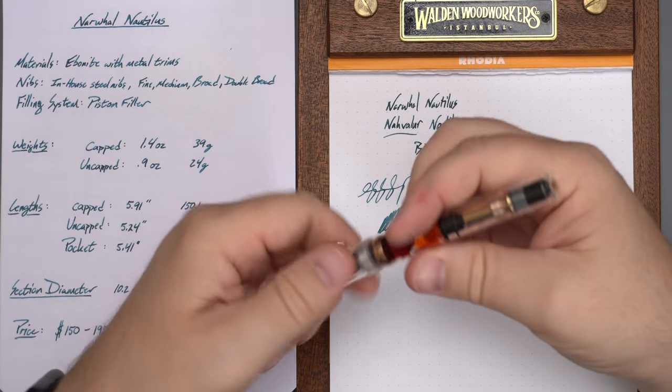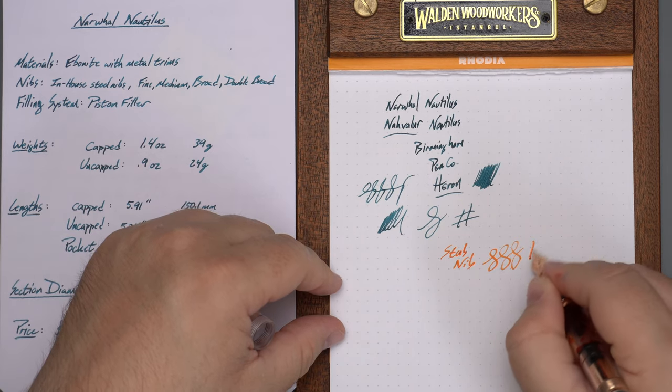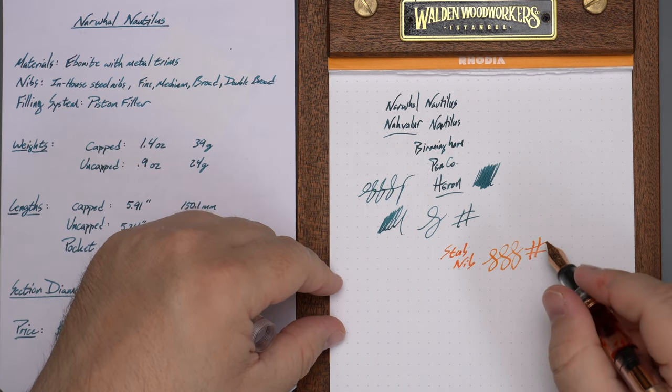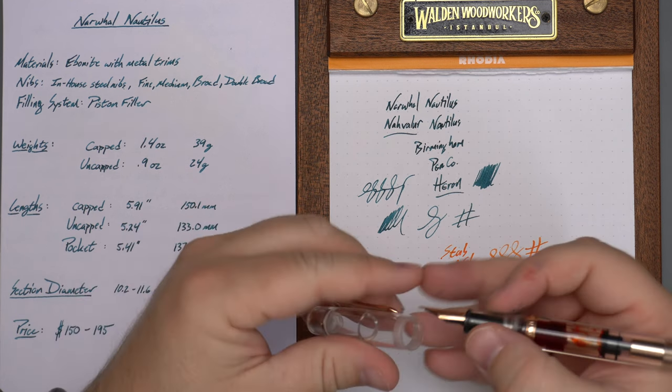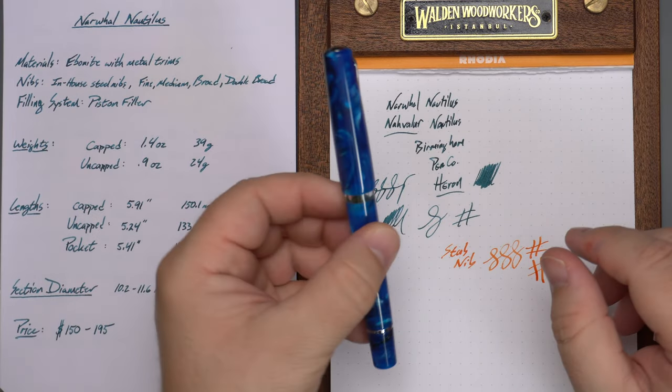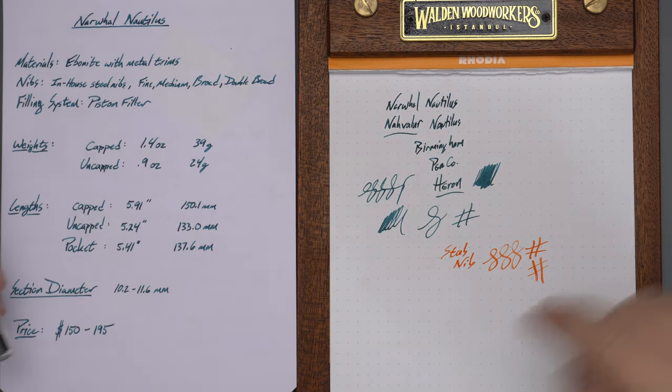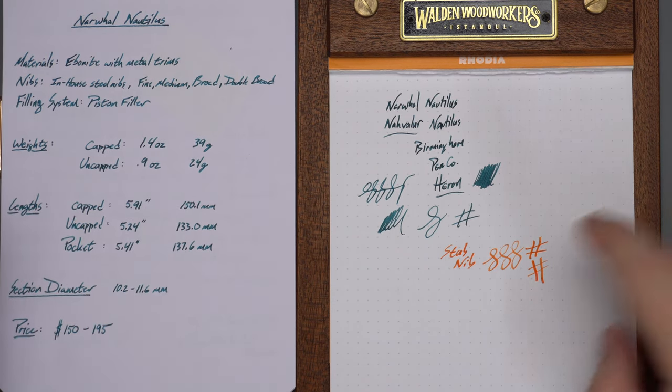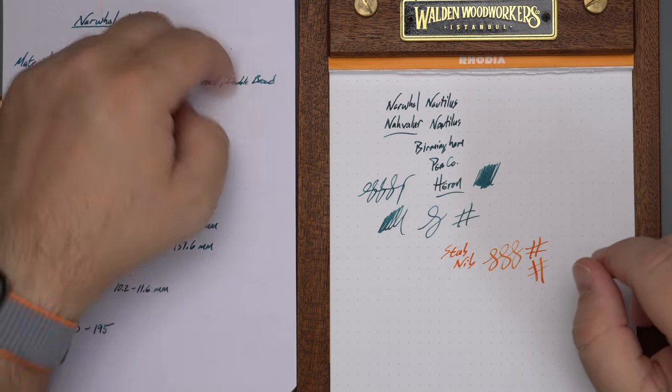I'll give you a little bit of the stub as well. This is the stub nib, which will give you a very nice wide downstroke and then a much thinner cross stroke. Good stuff there on the stub as well. This one's also a broad and not inked, so I can't really show you that one. But the broads and the stubs and the mediums have all written very well.